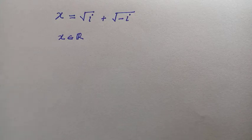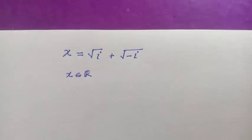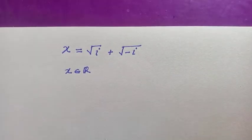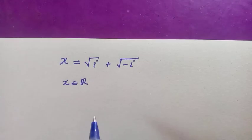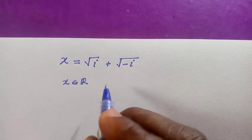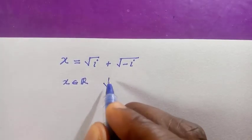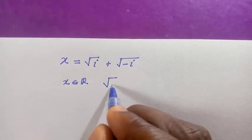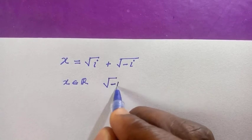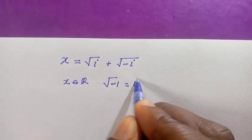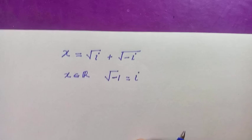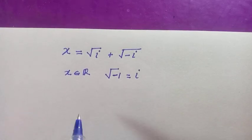Welcome to another video. In this problem we want to solve for the value of x, given that √i + √(-i) = x, where x is a member of the real numbers. Note that the square root of negative one equals i — it's a complex root.